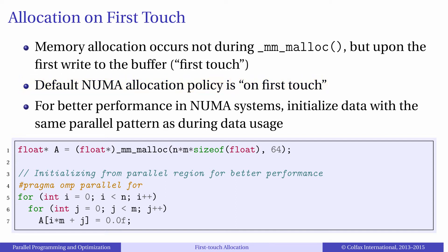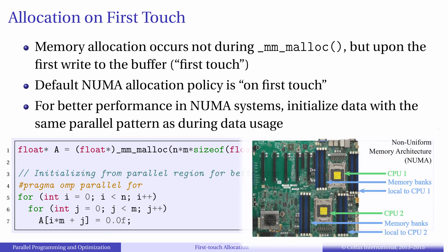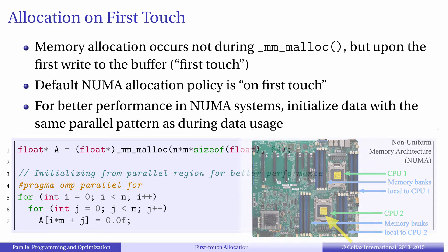This can be a good thing or a bad thing depending on what your code does. For example, if you have an array of data which you will process in parallel with multiple threads, but you first touch this array with one thread, then this entire array will be placed on the NUMA node that touched it. If we initialized array A by a thread working on CPU1, the entire array will end up on CPU1. This is bad because when we process the array with multiple threads, CPU2 will have slow access to the data.